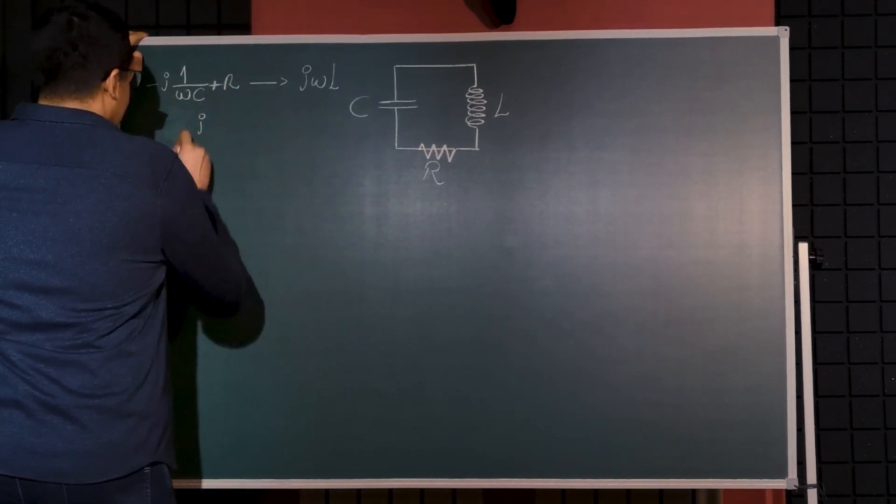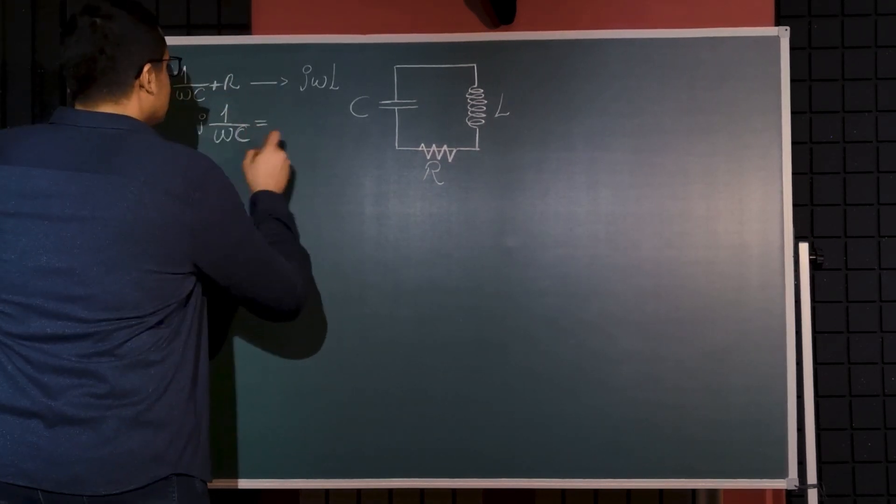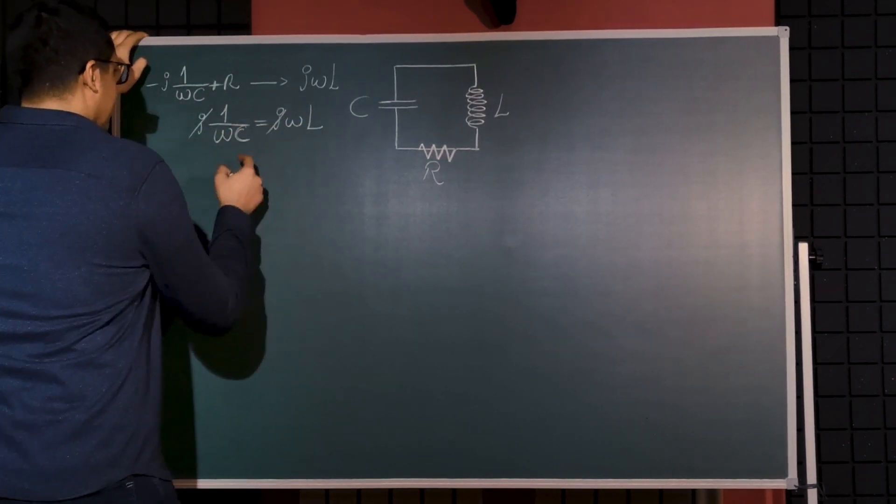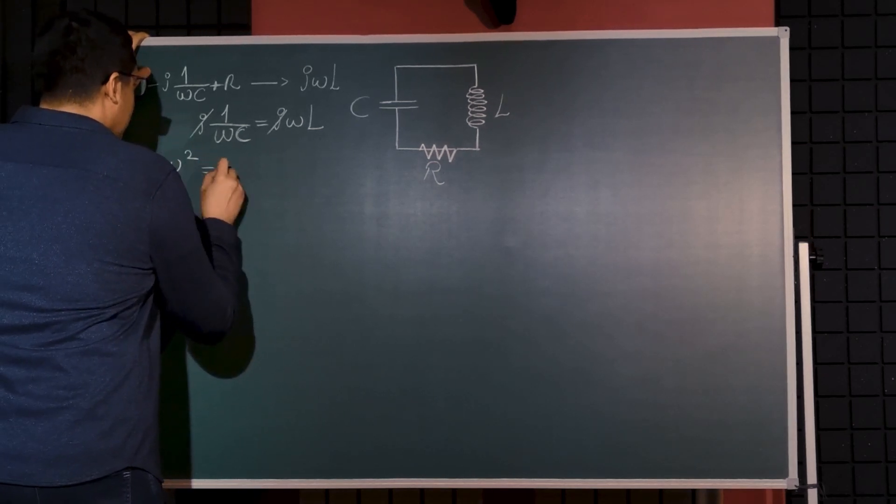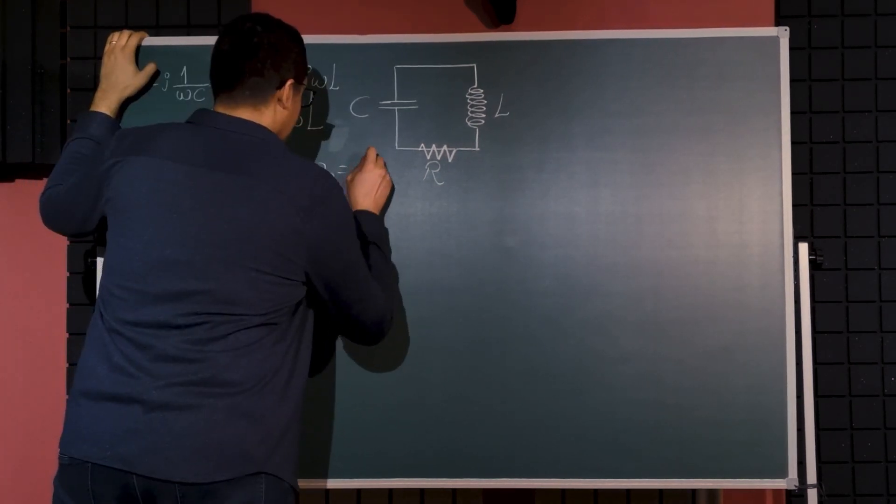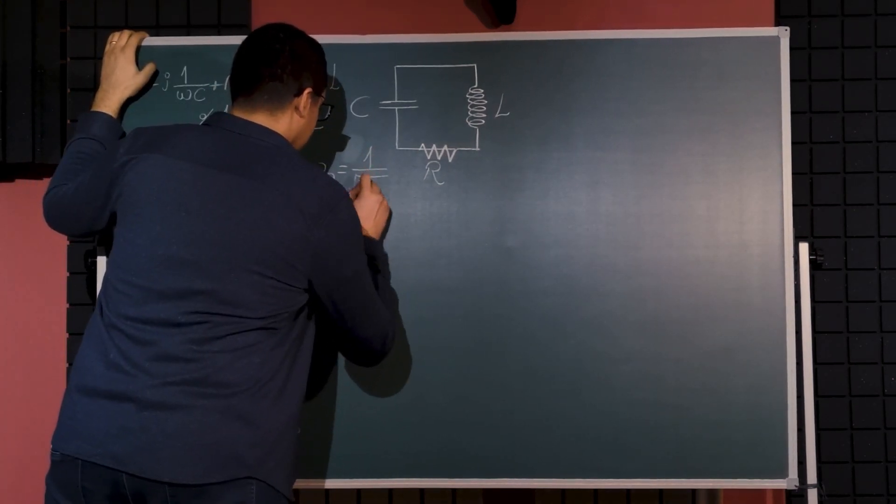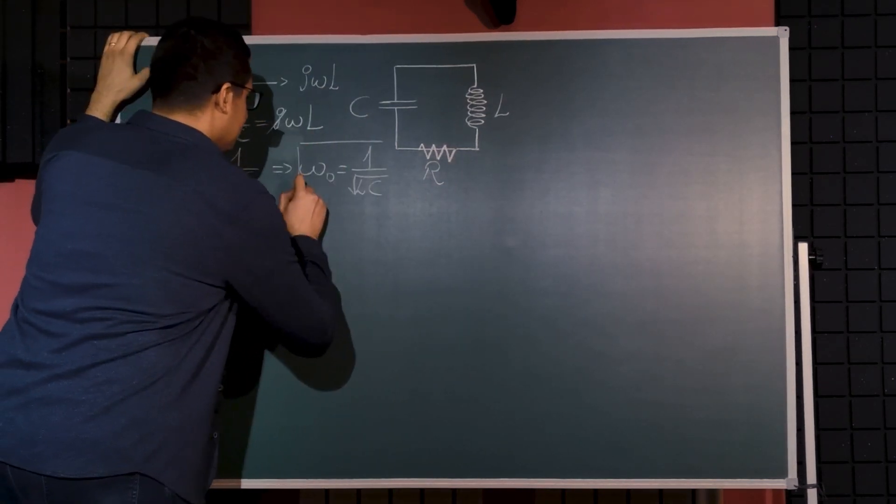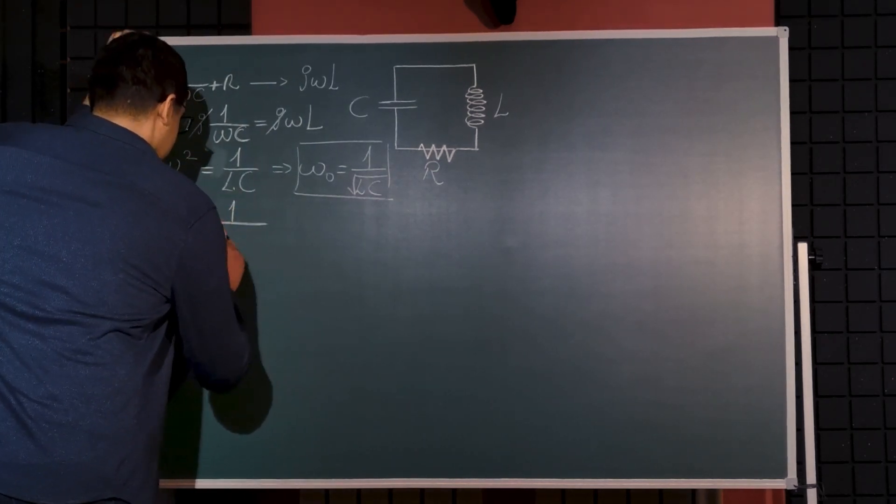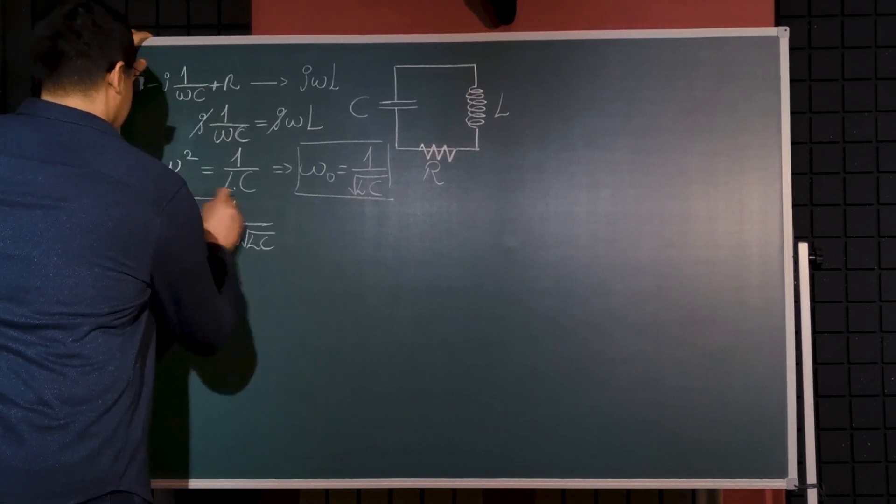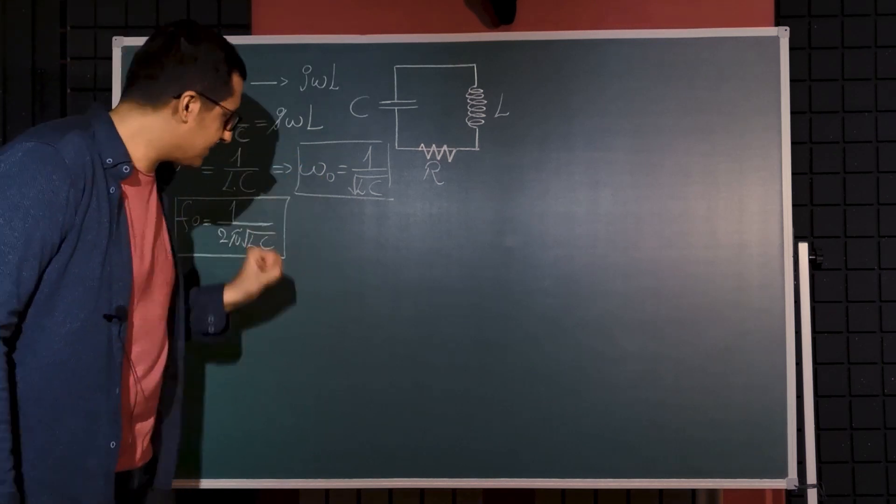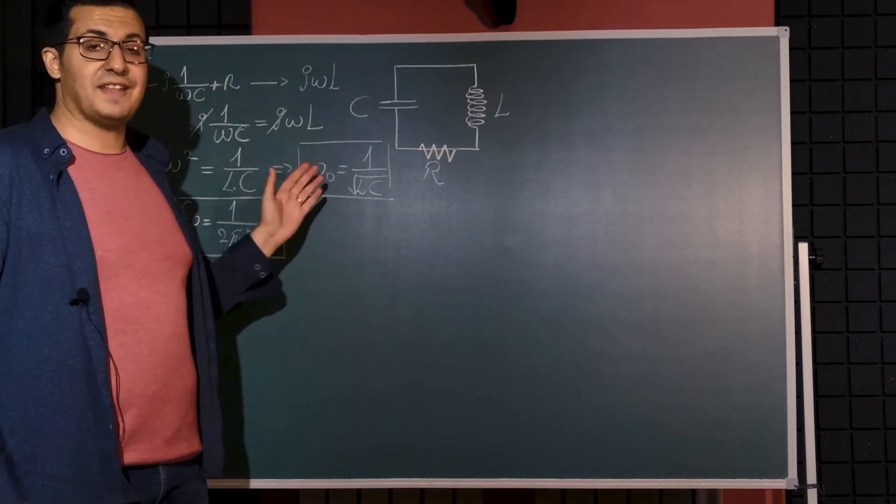That means j/(ωC) will be equal to jωL. And j is cancelled. Taking the omega to the other side will get ω² = 1/(LC). And as a result our natural frequency will be 1/√(LC). So this is my natural resonance frequency. You can also say f₀ = 1/(2π√(LC)). Indeed we have a negative counterpart of this frequency but we are only interested in the positive one because we are only interested in the absolute value.